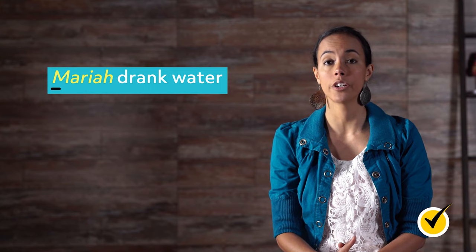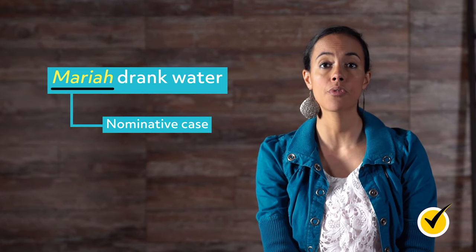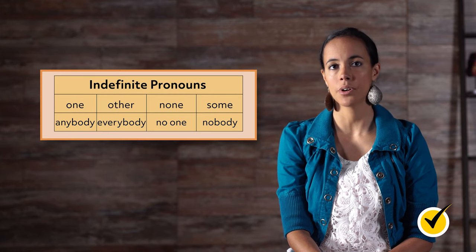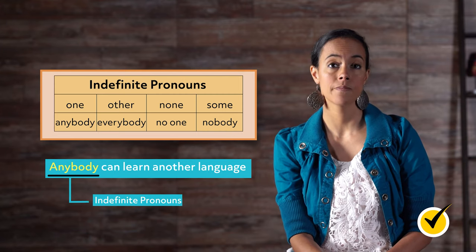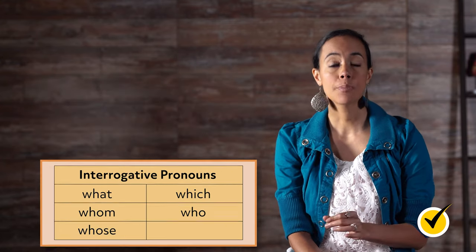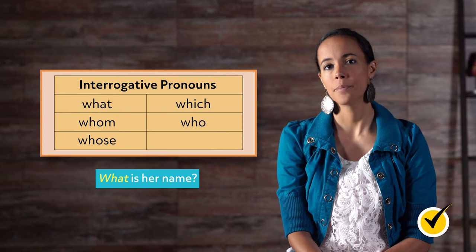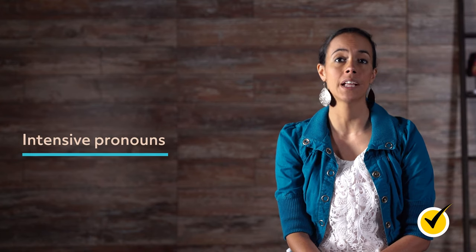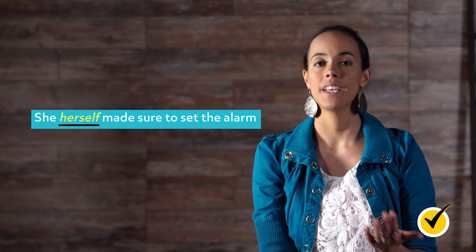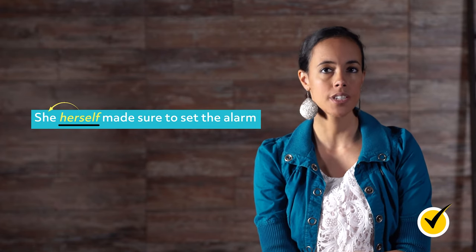Here's an example: Mariah drank water. Mariah is in the nominative case because she is performing an action on the water — the verb drink. For objective pronouns: Mariah caught the ball. The ball is the objective pronoun because it was the object that had an action performed on it — being caught. Indefinite pronouns represent a person or thing we don't have a specific number of: for example, anybody can learn another language. The indefinite pronoun is anybody because it refers to an immeasurable amount of people. Intensive pronouns emphasize the pronouns that immediately preceded them: She herself made sure to set the alarm — herself is the intensive pronoun.